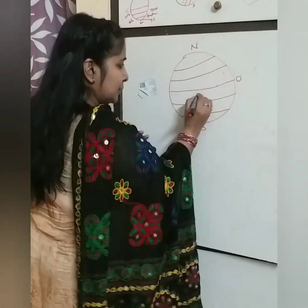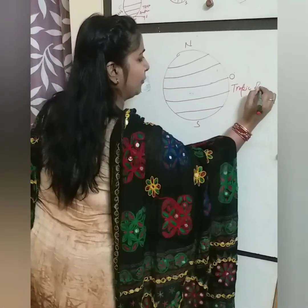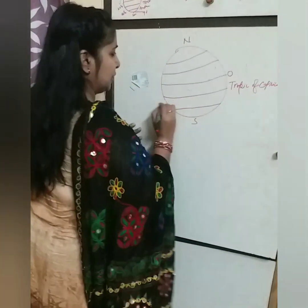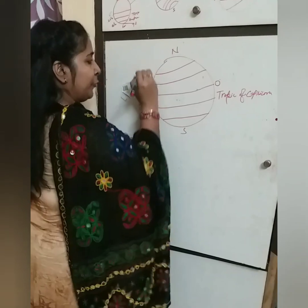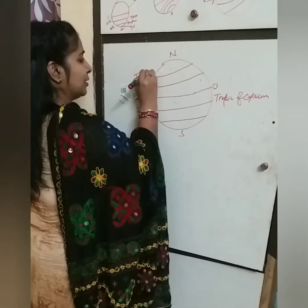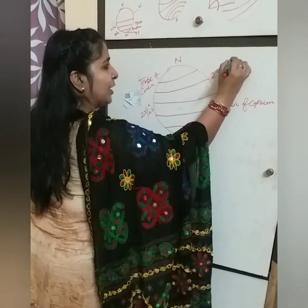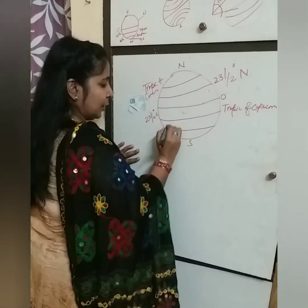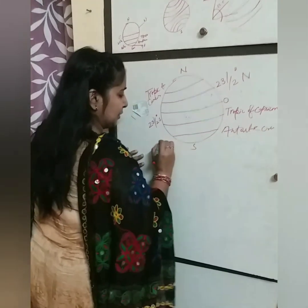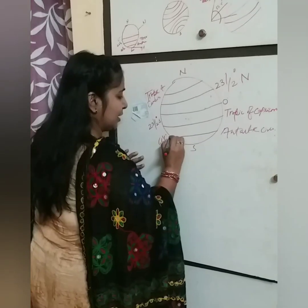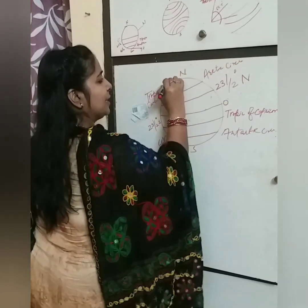Moving from the equator, the Tropic of Capricorn is at 23.5 degrees south. The Tropic of Cancer is at 23.5 degrees north. The Antarctic Circle is at 66.5 degrees south, and the Arctic Circle is at 66.5 degrees north.